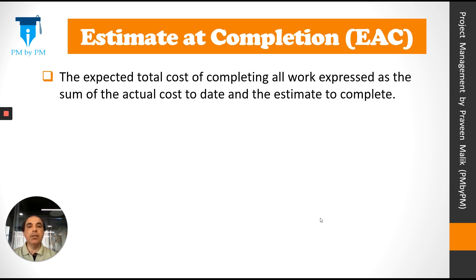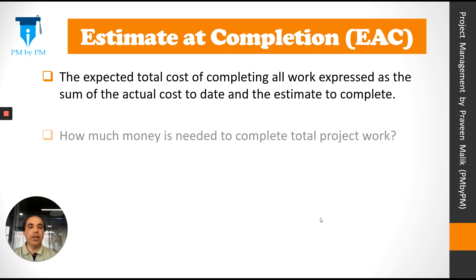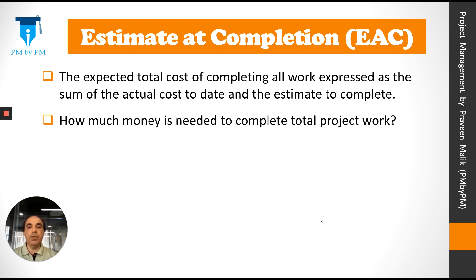Let's start by looking at the definition of EAC: the expected total cost of completing all work, expressed as the sum of the actual cost to date and the estimate to complete. A simpler definition: how much money is needed to complete total project work? In both definitions, we are talking about completing total project work.